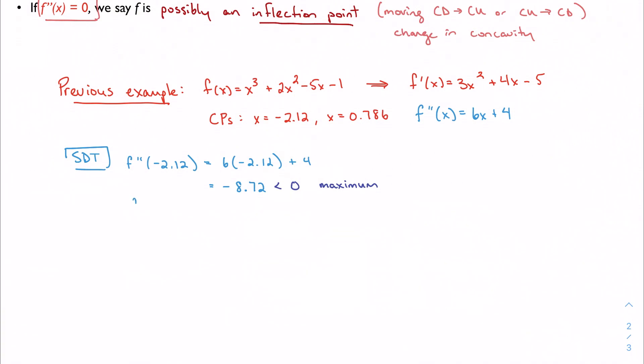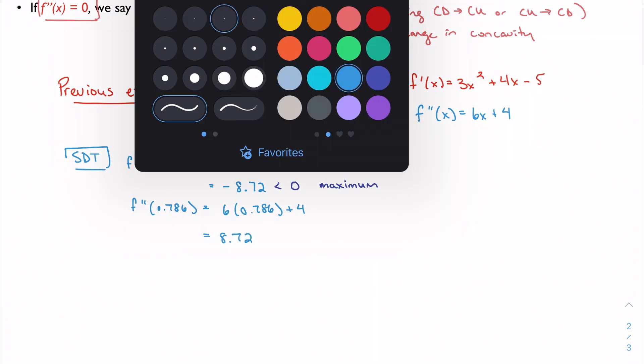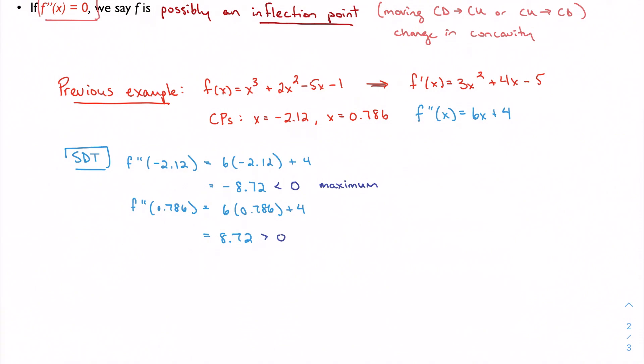If I do this with 0.786, I get positive 8.72, which, of course, is a positive number. And so that is a minimum, which, again, checks out with what we said in the first derivative test video. So this is another way that we can find or classify local extrema using the second derivative test.